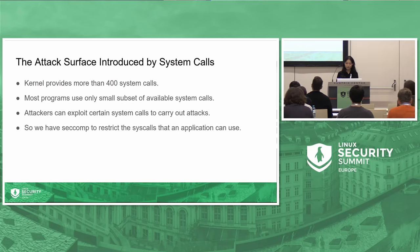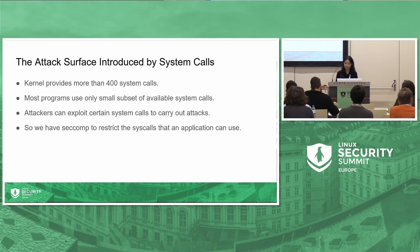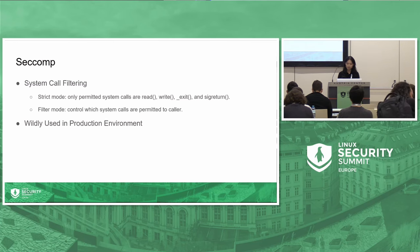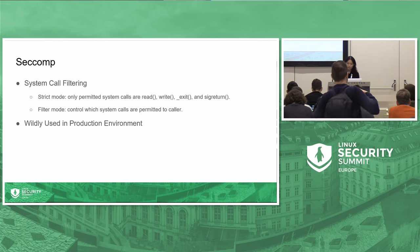As we all know, the kernel offers over 400 different system calls, but most programs only use a small subset of them. Attackers can exploit certain system calls to launch attacks. That's why we have seccomp, which allows us to limit the system calls that a program can use. Seccomp is a feature in the Linux kernel that provides an extra layer of security. It works by allowing a process to define a filter specifying which system calls are permitted and which are not. When the process is running under a seccomp filter, any attempt to make a disallowed system call will result in the process being terminated. This can help to mitigate the impact of security vulnerabilities as well as reduce the attack surface for potential exploits.